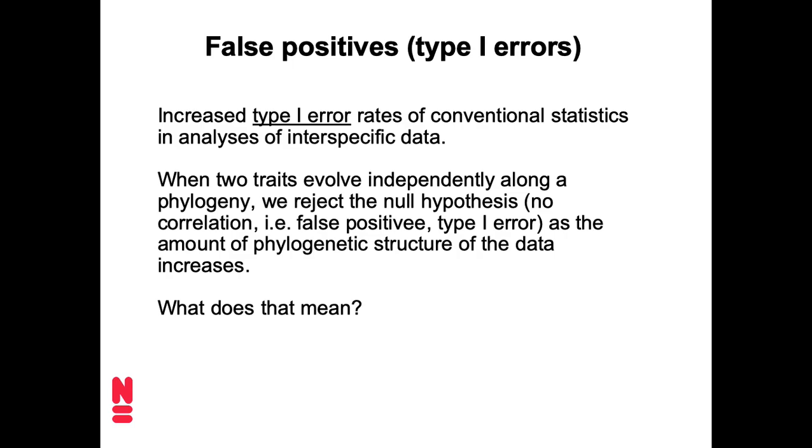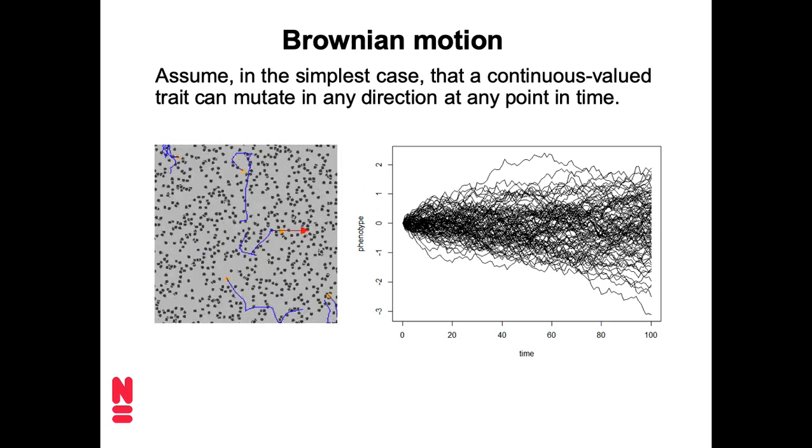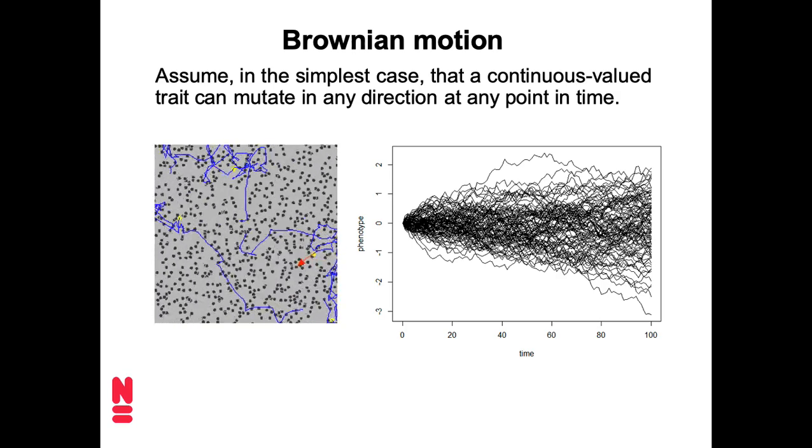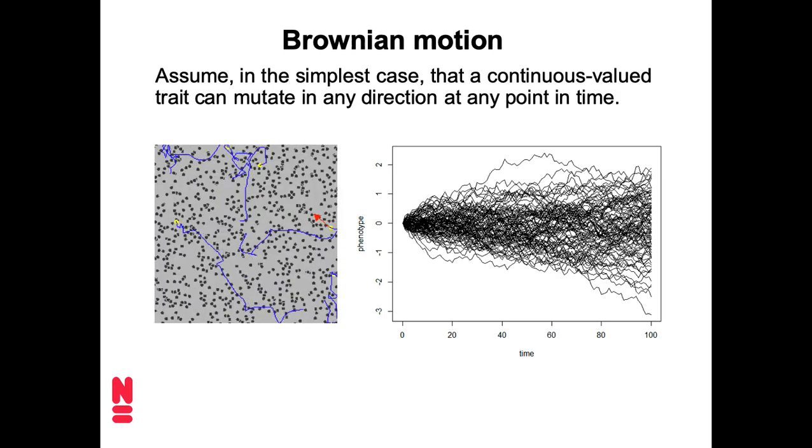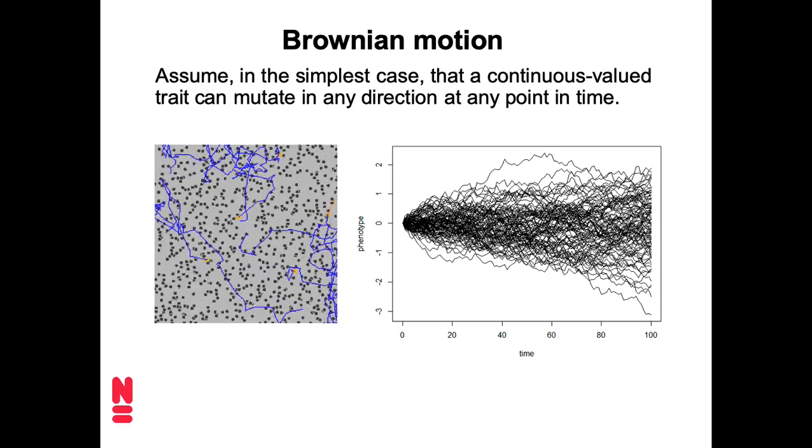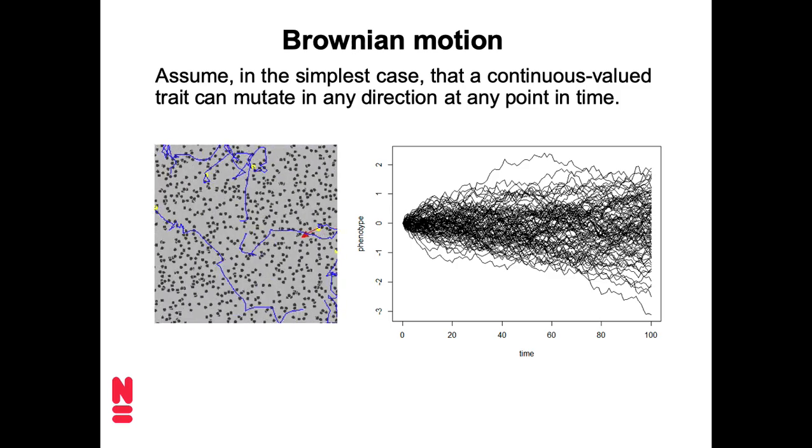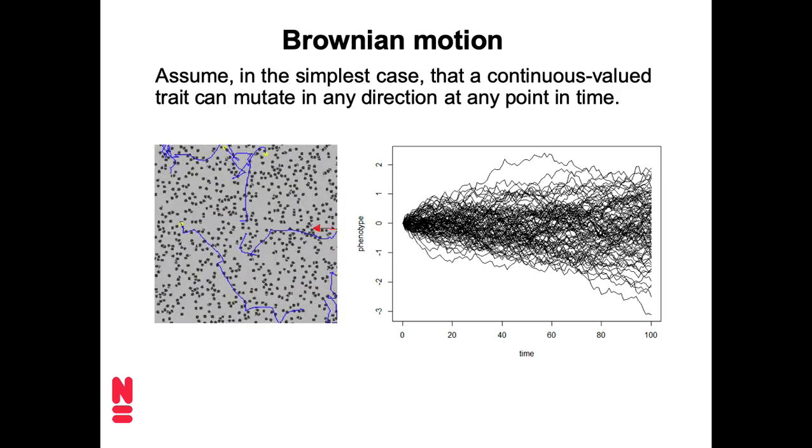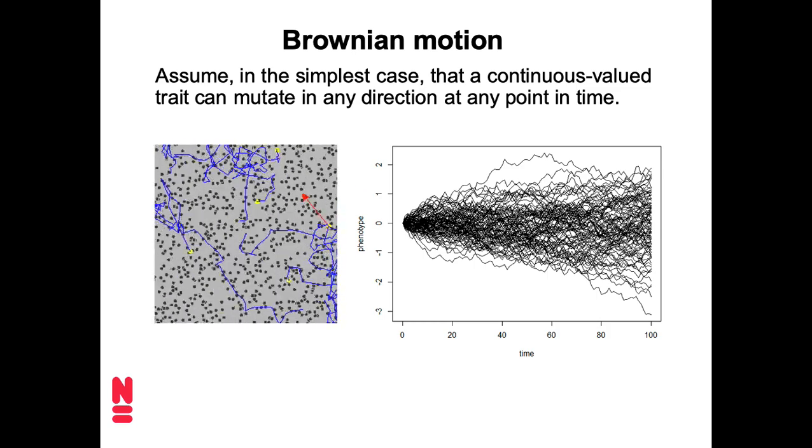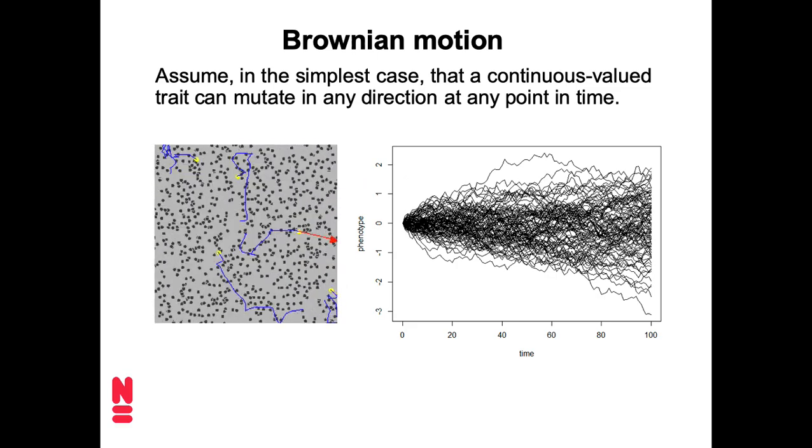Here's a very simple model for that. The model is called Brownian motion. Brownian motion is named after a botanist, Robert Brown, who was studying the behavior of pollen grains in suspension in water. It looked like they were just equally likely to go in any direction at any time, basically what you see in the animation on the left. And actually, Einstein worked a little bit on this and did some of the math for this.